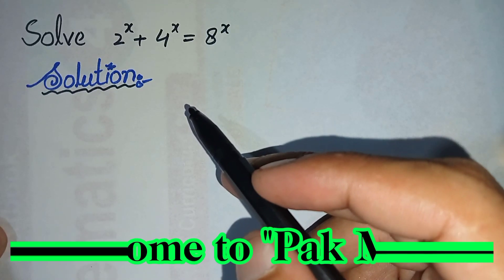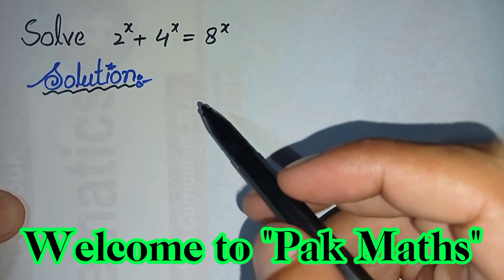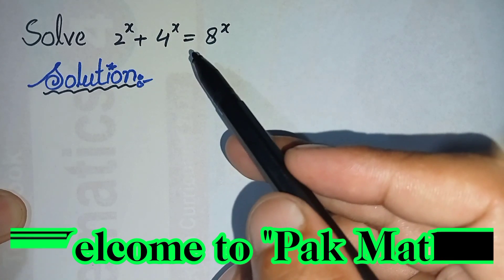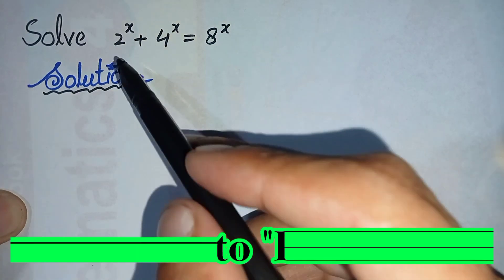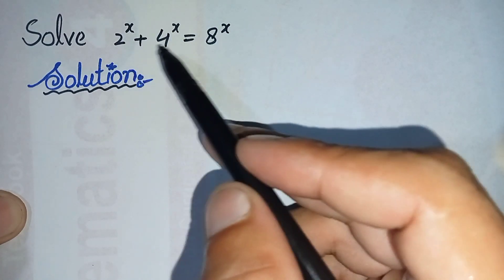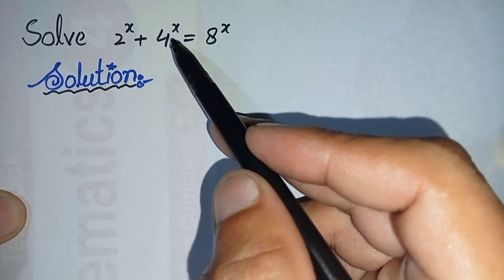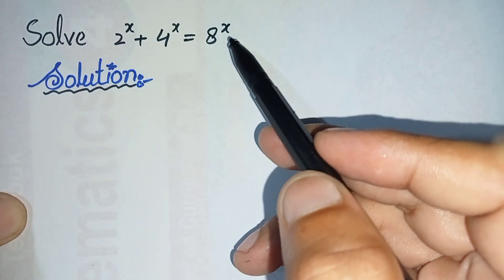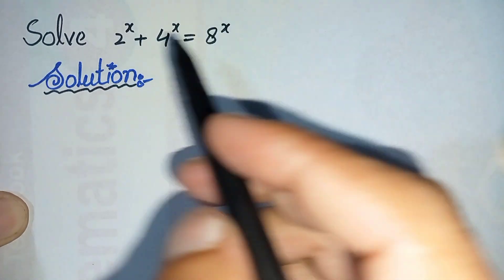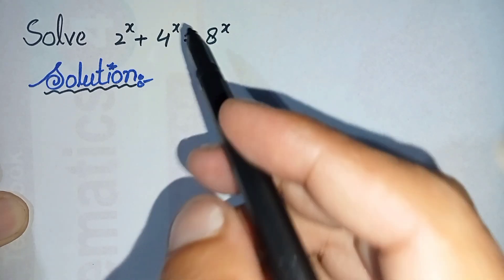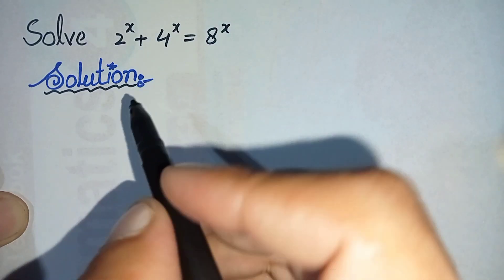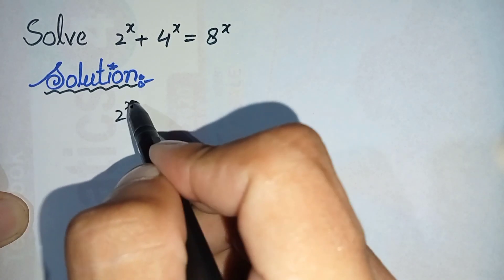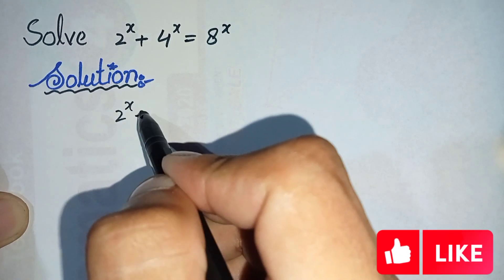Hi everyone, welcome to Parkmas. In this video I'm going to solve this amazing math problem: 2 raised to power x plus 4 raised to power x is equal to 8 raised to power x. First of all, we will write this question in the solution again.